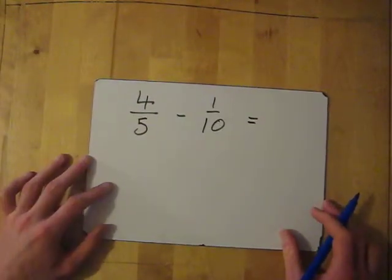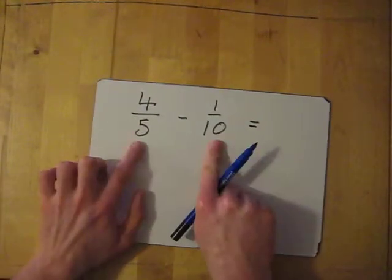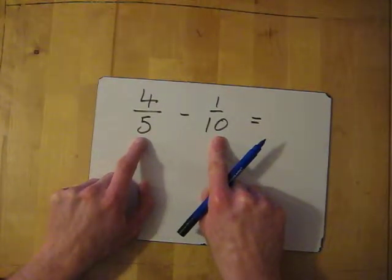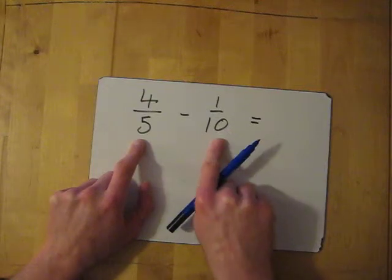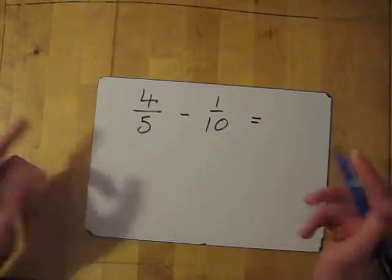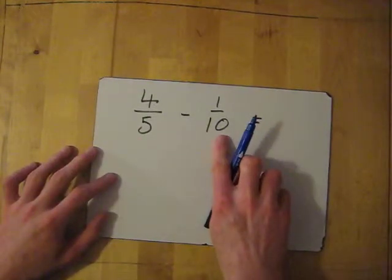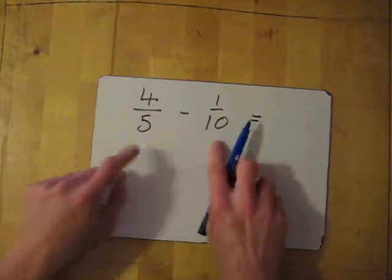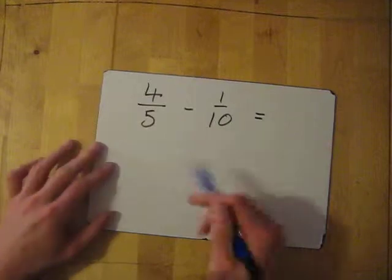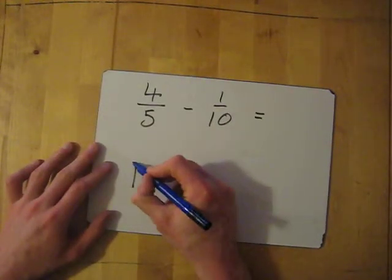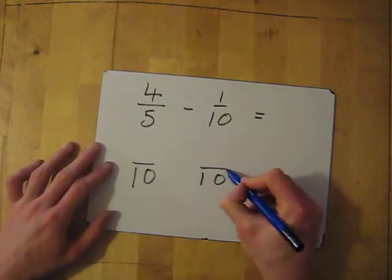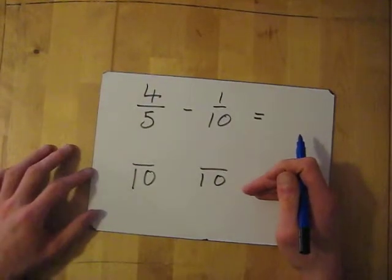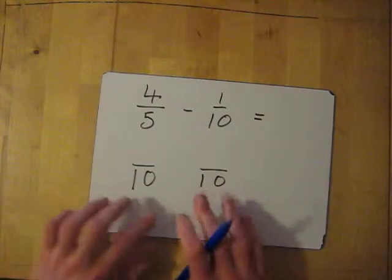So I've got four fifths take away one tenth. The first thing I need to do is find the common denominator between five and ten — what is in the five times tables that's also in the ten times tables. That's quite easy: two times five is ten, and one times ten is ten, so ten is a common multiple. We turn them both into tenths and write it below.